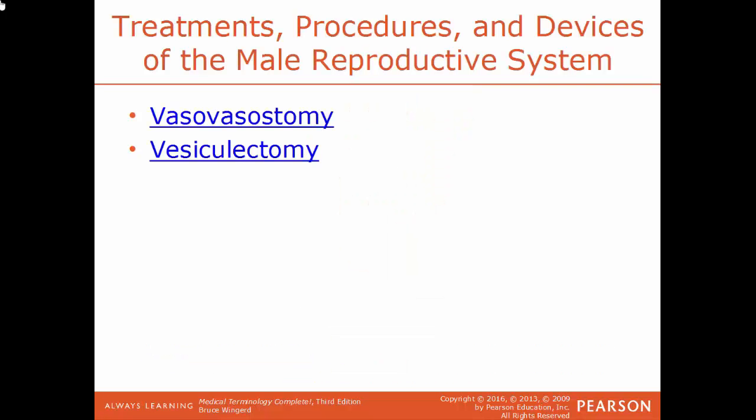Vasovasostomy is a procedure where a vasectomy is partially reversed. If the ends of the vas deferens were tied off rather than cauterized, they can be untied and sewn back together — reversing the vasectomy. If the ends were cauterized, it cannot be reversed. Vesiculectomy is the surgical removal of the seminal vesicles.